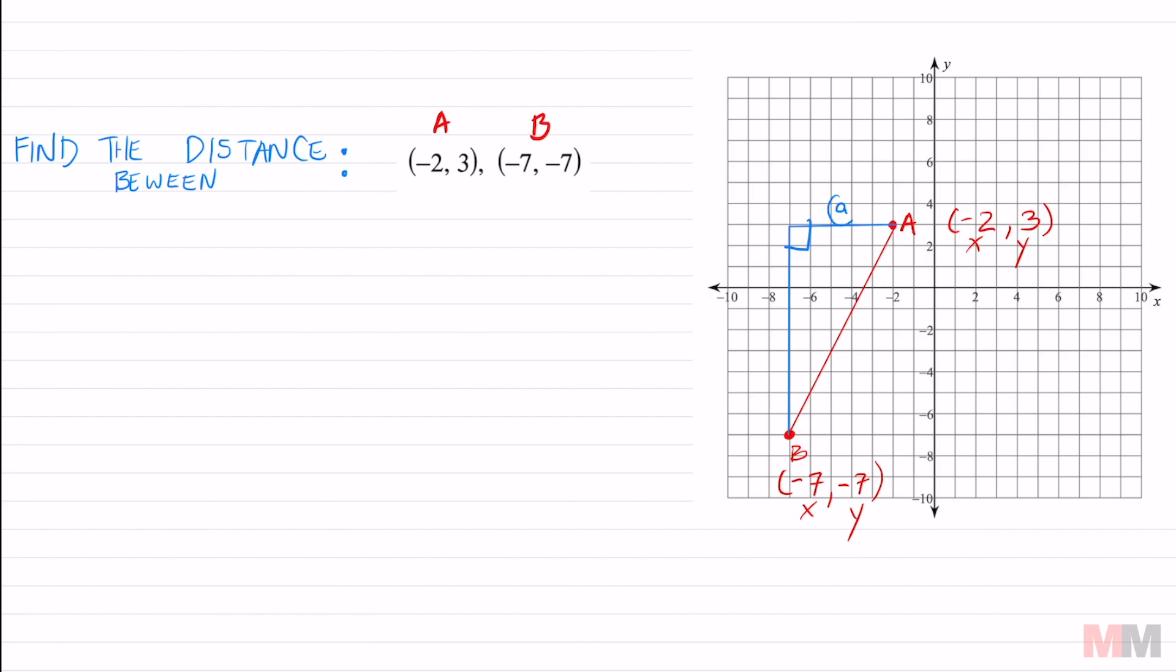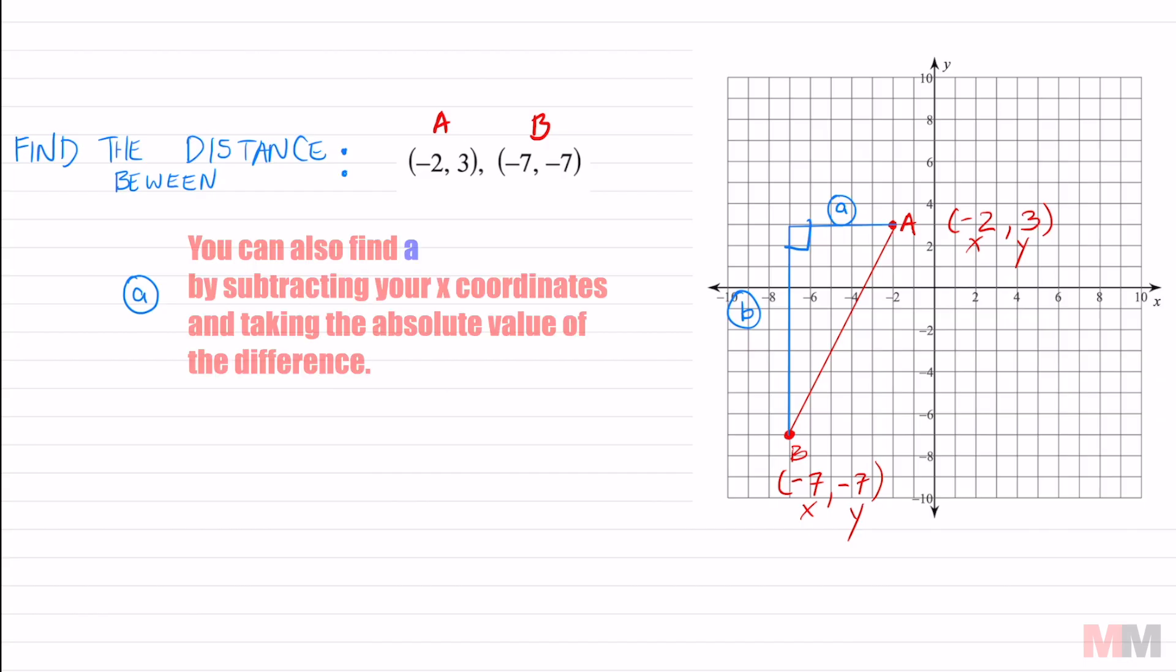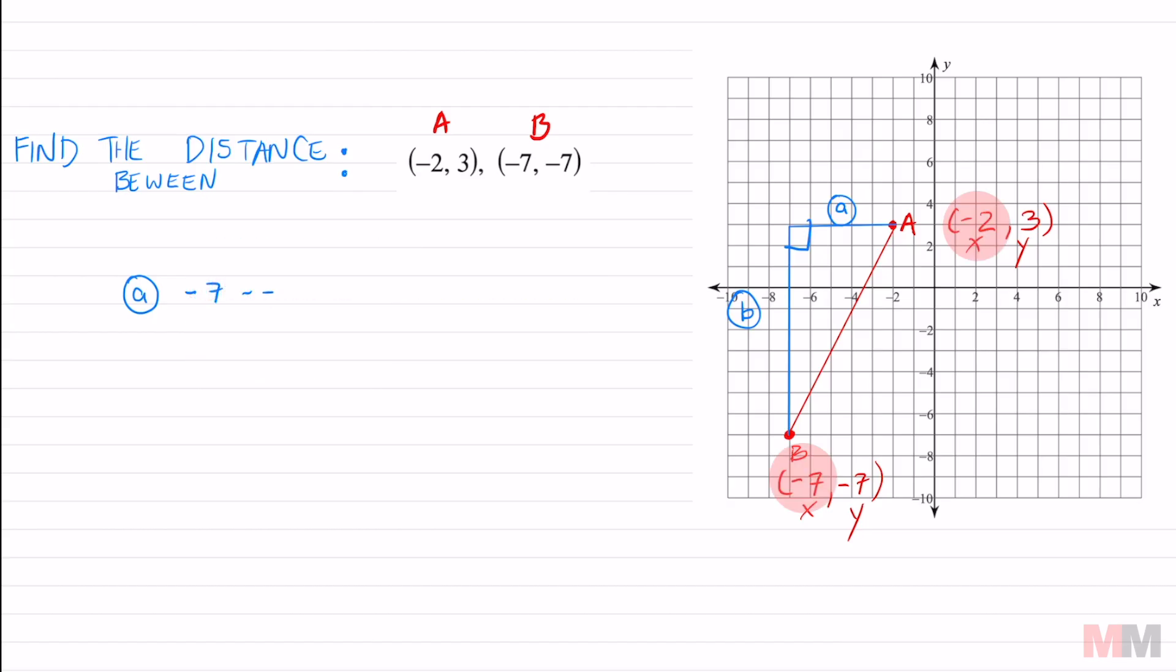To find A, I mean, yes, we can simply count, but I also want you to know how to do it another way. To find A, we can just subtract the x coordinate and find the absolute value of it. So we're gonna take negative seven and subtract negative two. So that's gonna get you negative five. But you can take the absolute value of that to get five because you can't have a negative five distance. That's where that absolute value comes from.